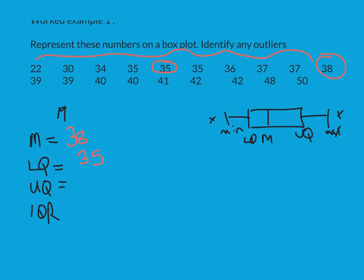And likewise, my upper quartile is halfway along the second lot, which is 41. So my interquartile range is 41 take away 35, which is 6.